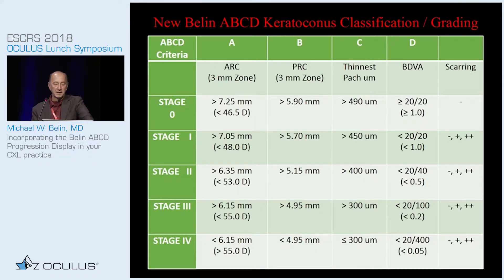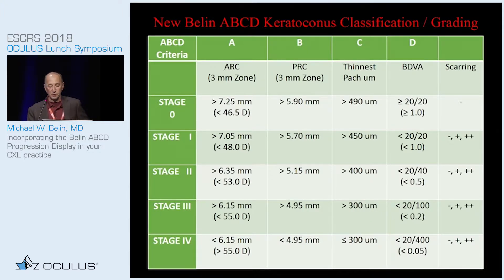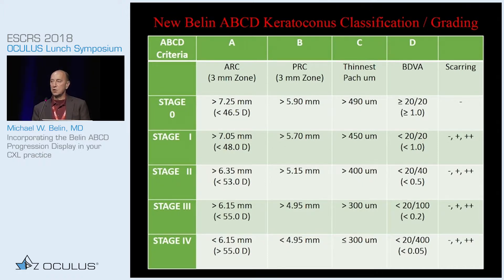We came out with this about two years ago. It's currently available on the Pentacam and it's called the ABCD classification system. A stands for Anterior Radius of Curvature, measured from a three-millimeter zone centered on the thinnest point — not the apical reading. B is for back or posterior radius of curvature, again centered on the thinnest point on a three-millimeter optical zone. C is for thinnest corneal measurement, not just an apical measurement. And D is distance visual acuity.